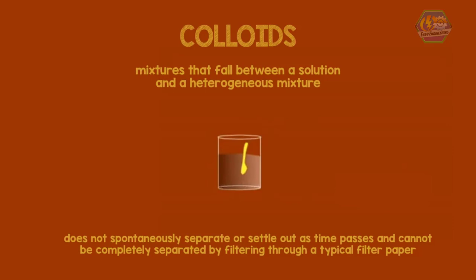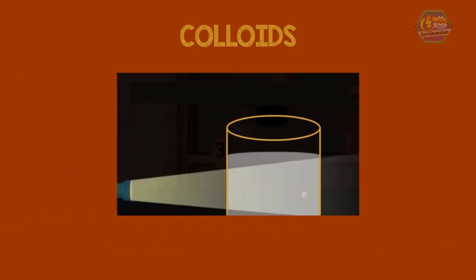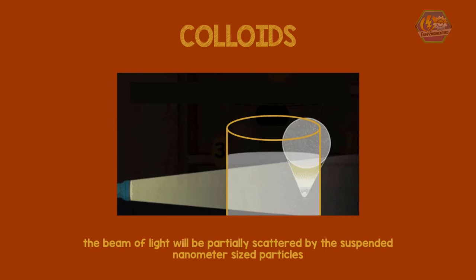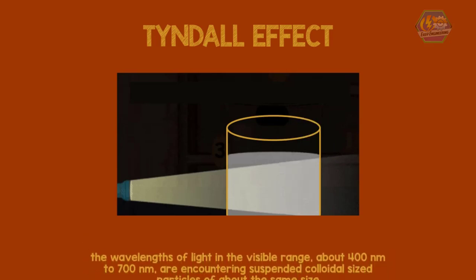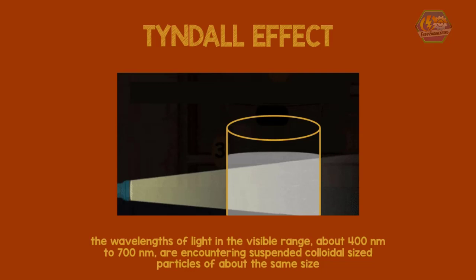A colloidal mixture can also be recognized by shining a beam of light through the mixture—just like when you use flashlight amidst the fog, the beam of light will be partially scattered by the suspended nanometer-size particles and can be observed by the viewer. This is known as the Tyndall effect. In the case of the Tyndall effect, some of the light is scattered since the wavelengths of light in the visible range—about 400 nanometers to 700 nanometers—are encountering suspended colloidal-size particles of about the same size.